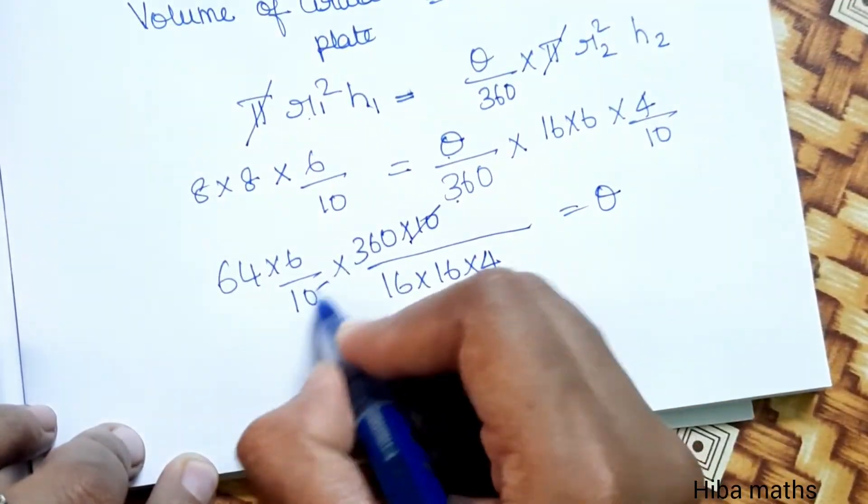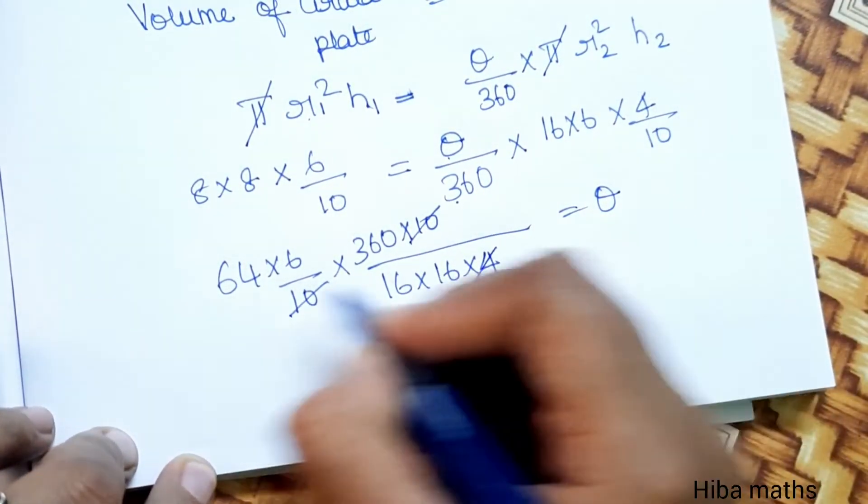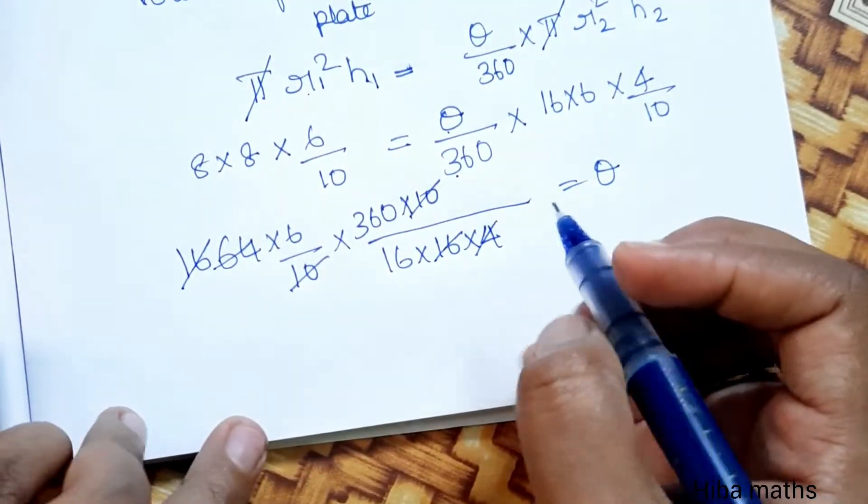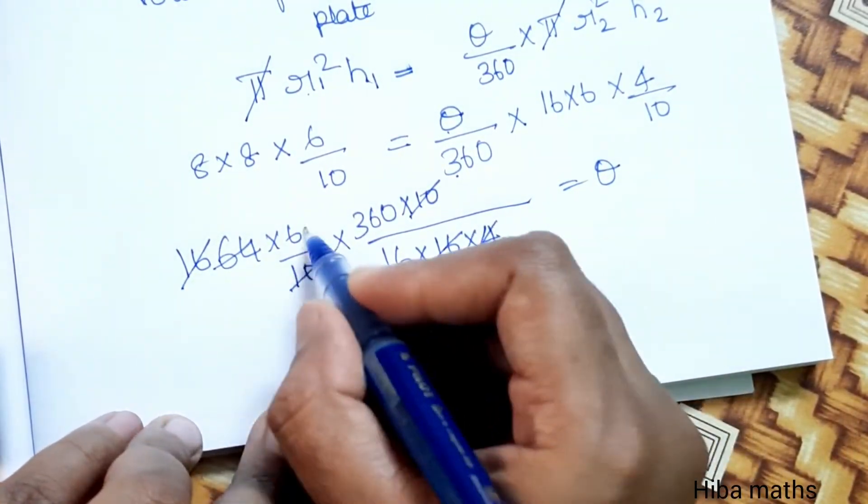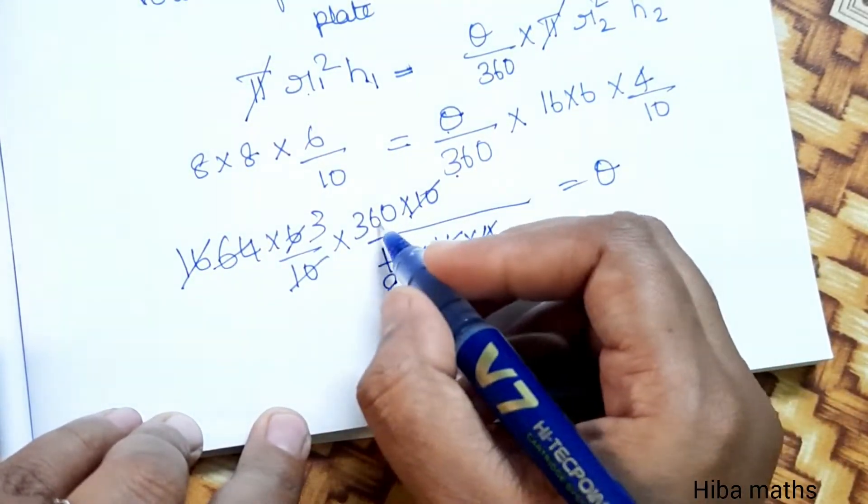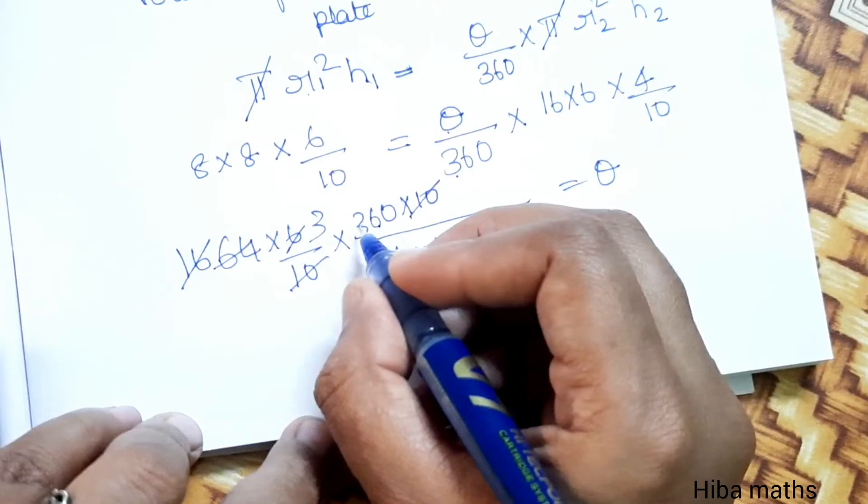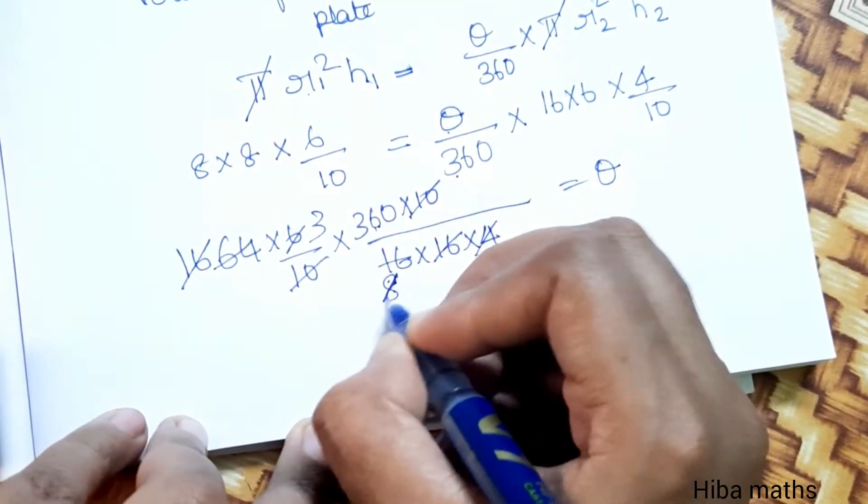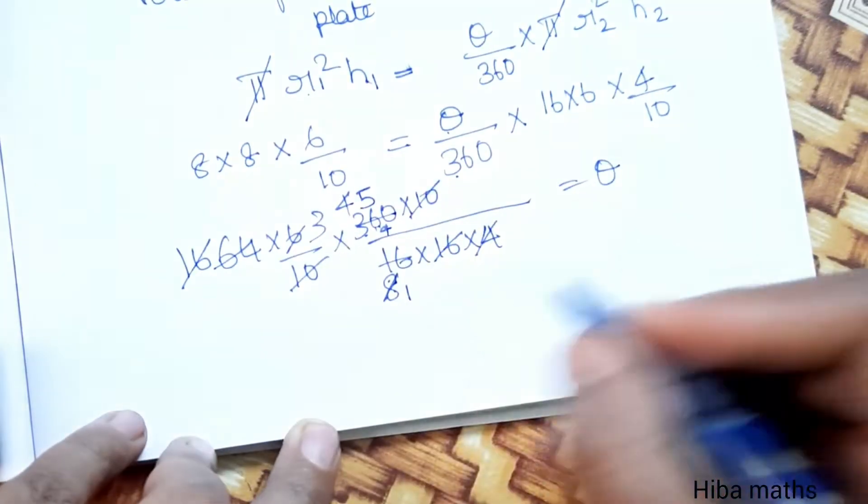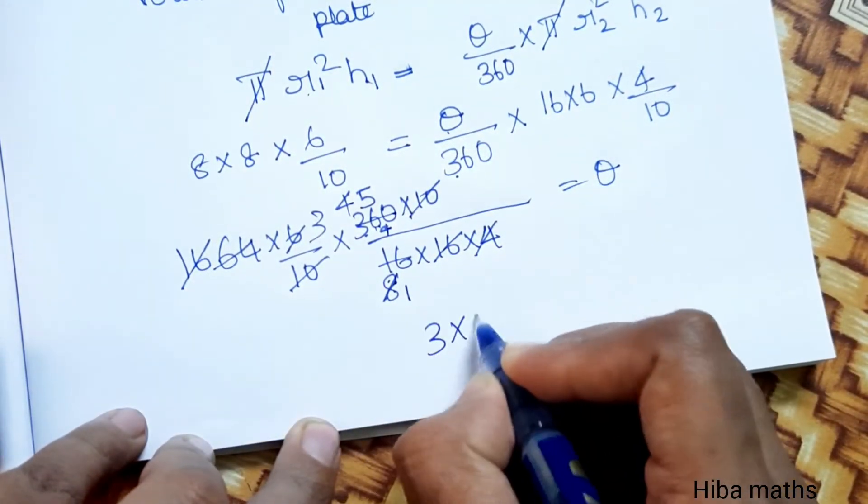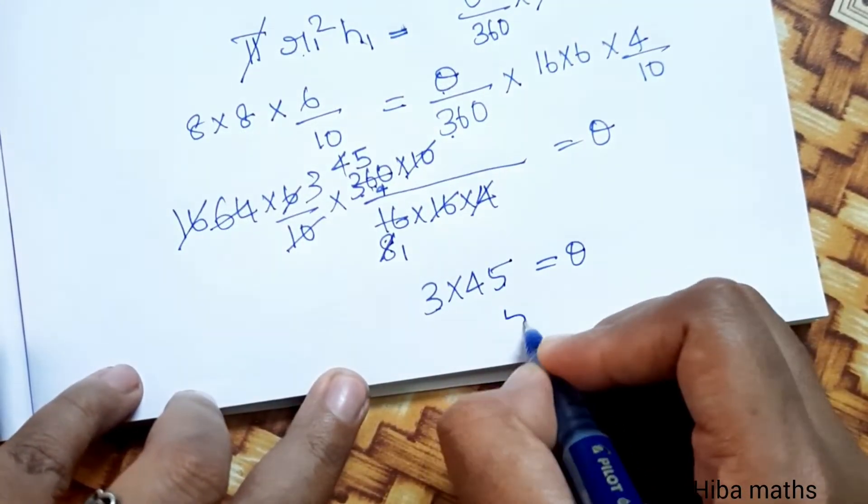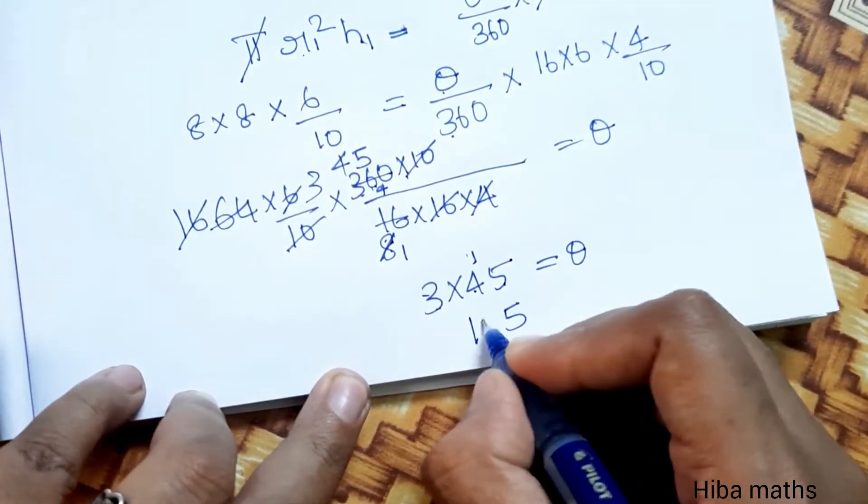Canceling terms: 10s cancel, π cancels. Simplifying: (8×8×6) / (16×16×4) × 360 = θ. After cancellation and calculation, 135 degrees equals theta.